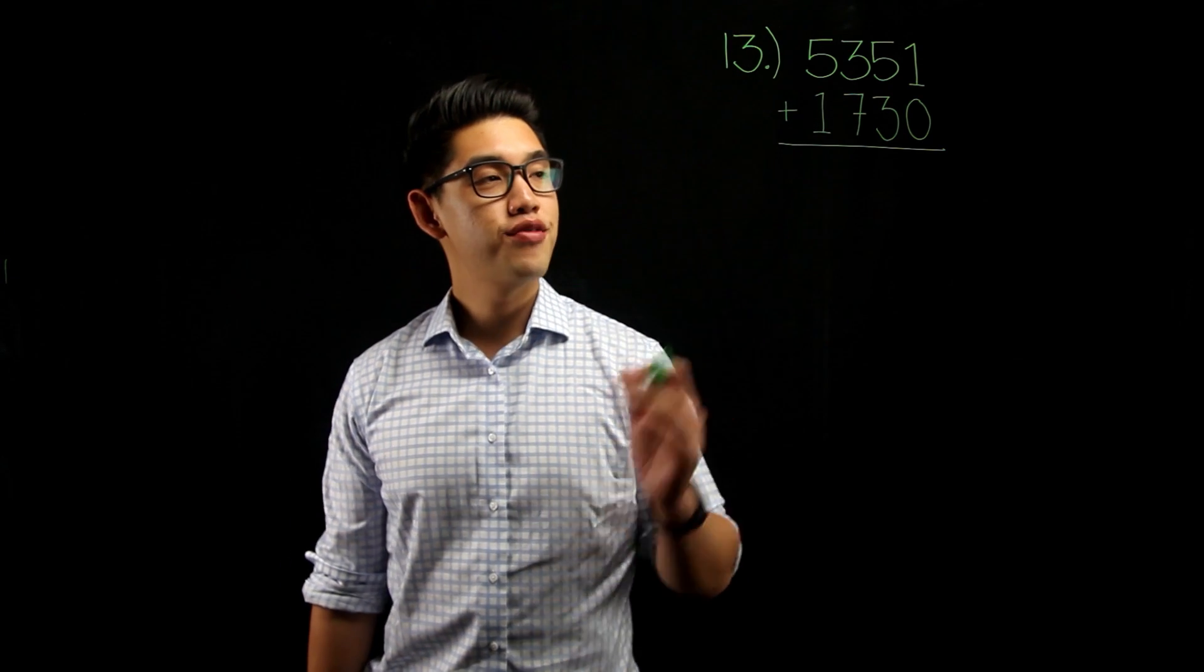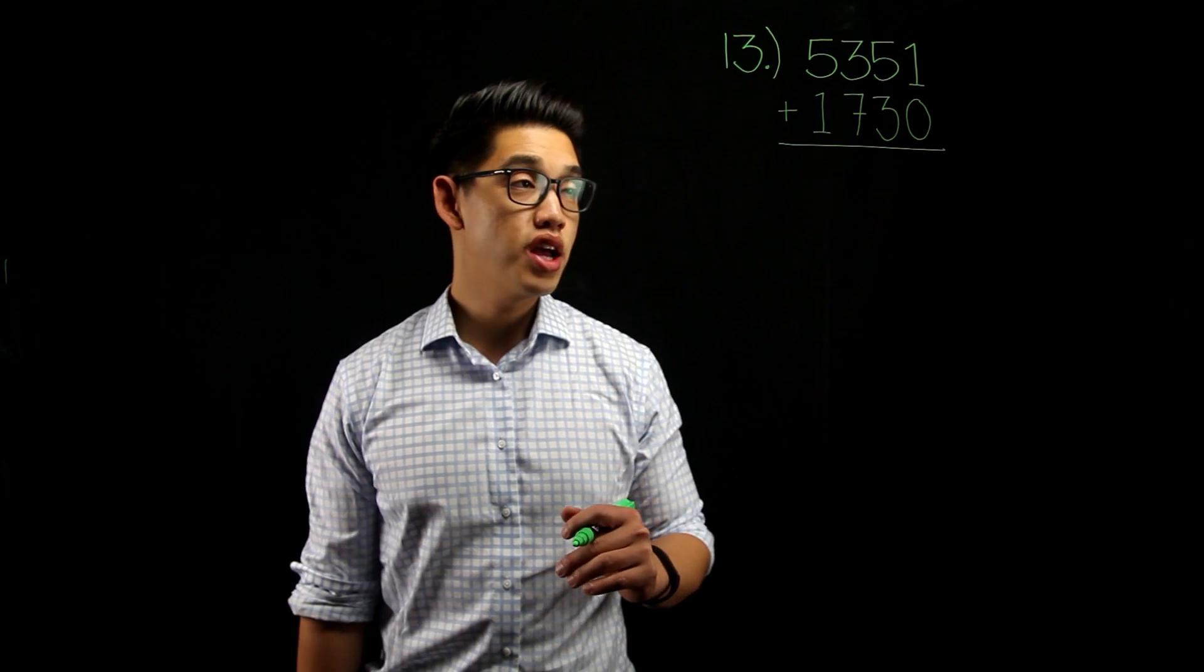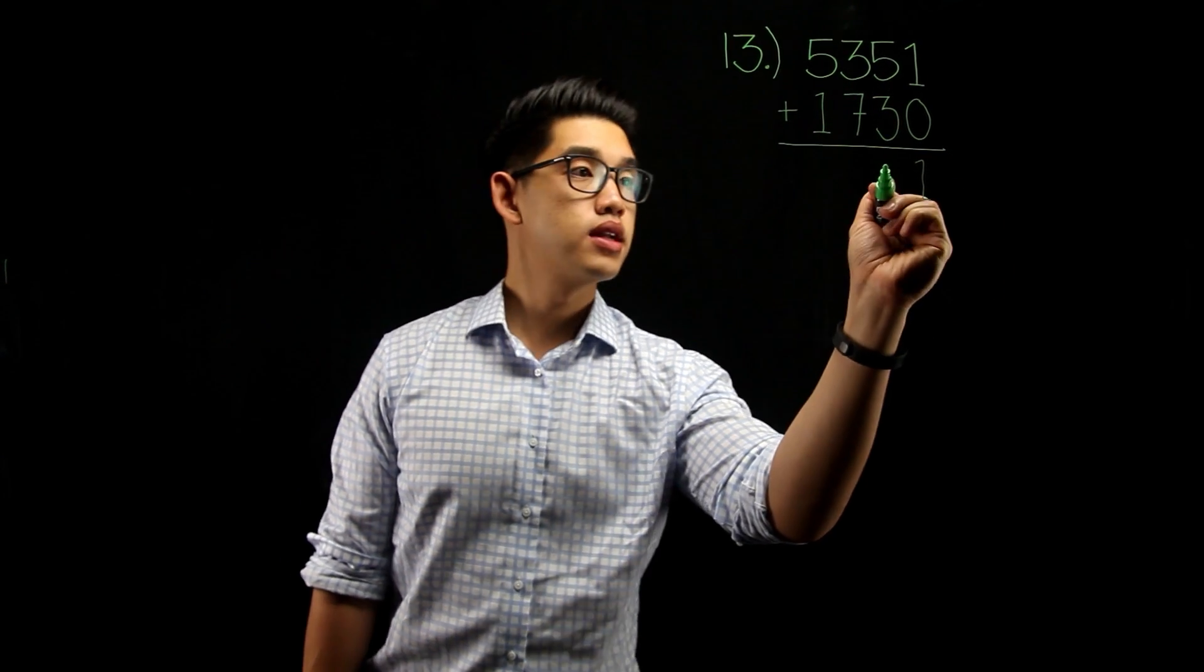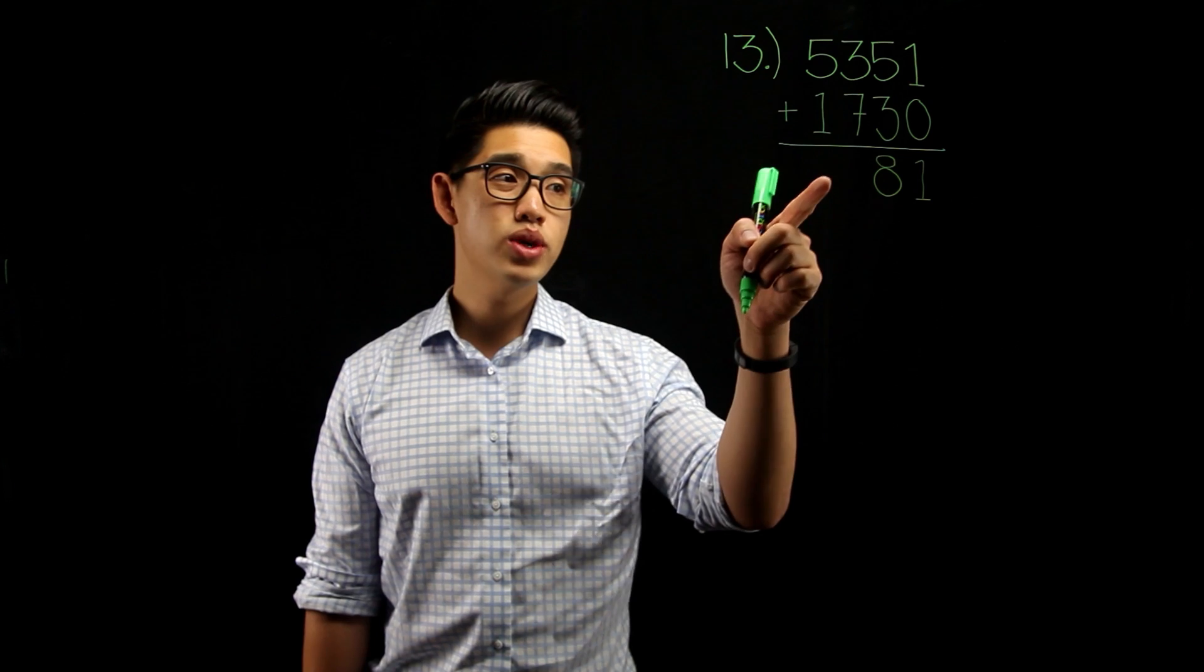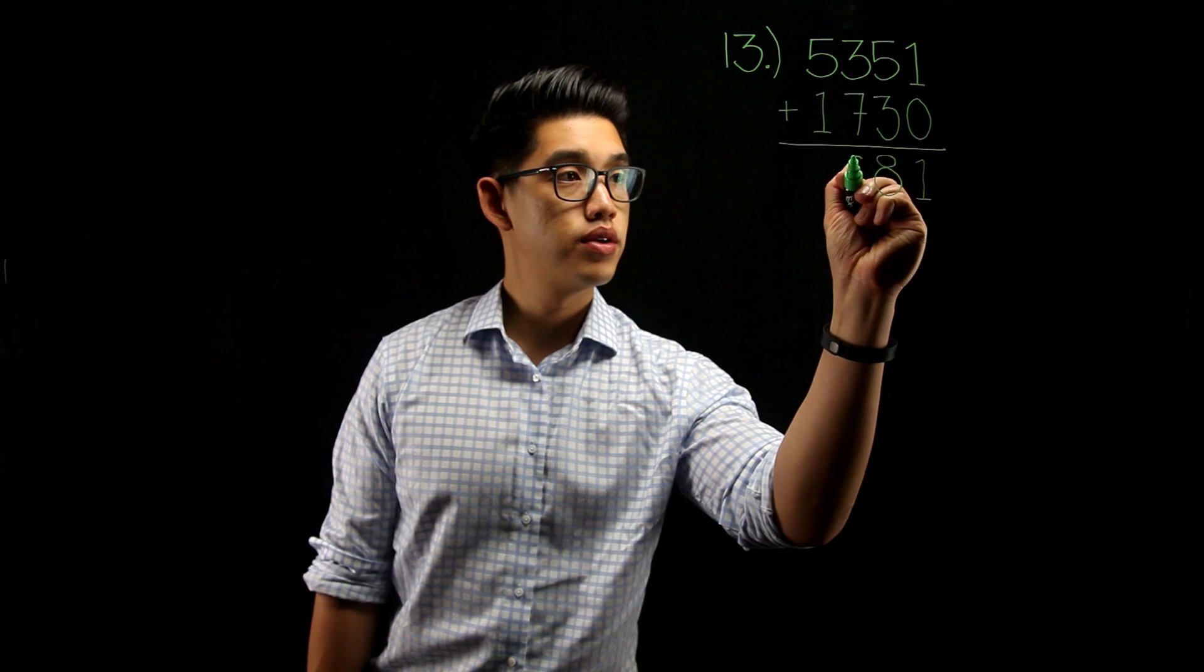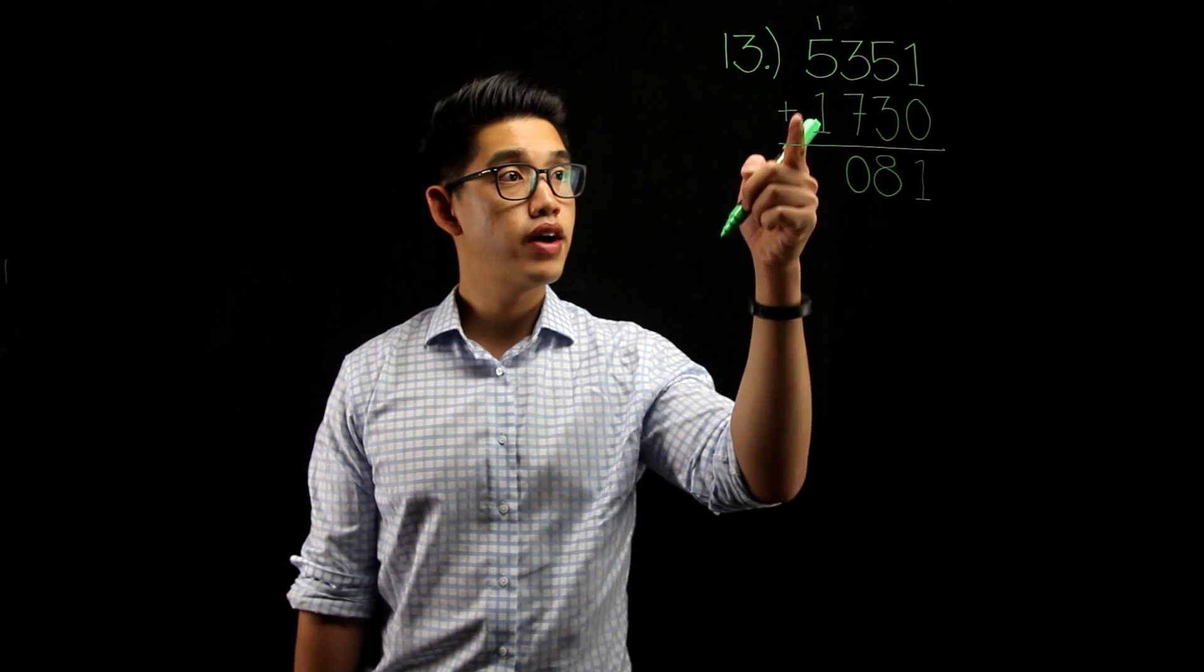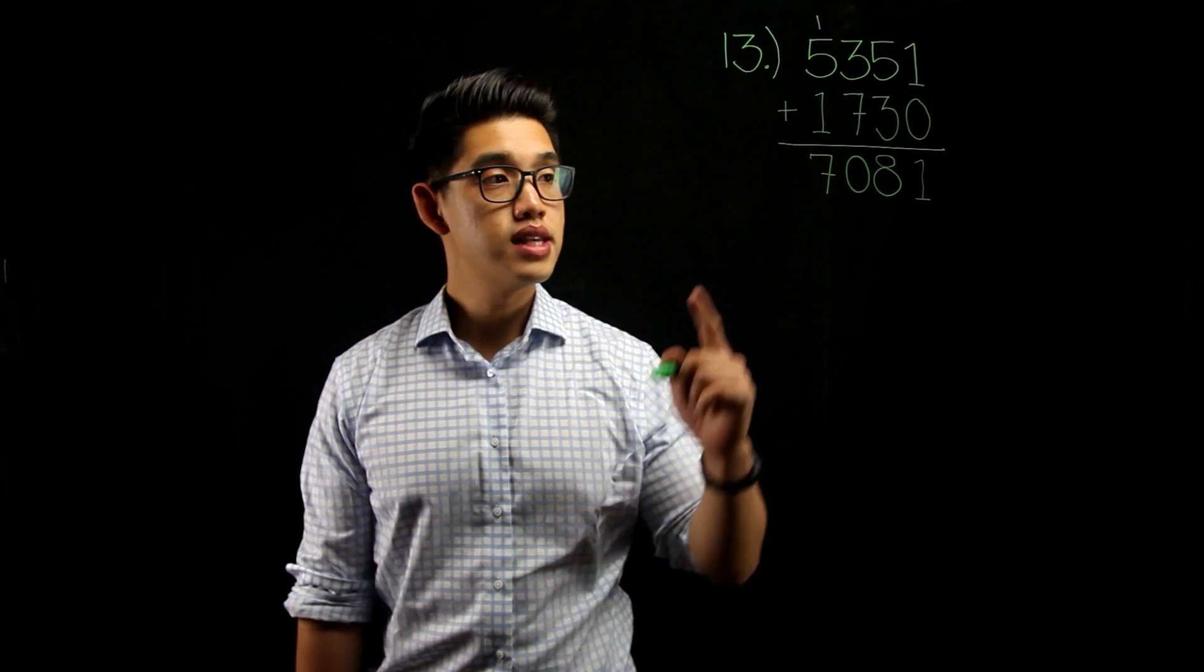For number 13, we have 5,351 plus 1,730. When we want to add these two numbers together, it's pretty easy. All we have to do is add up and down. We have 1 plus 0, that's going to give you 1. 5 plus 3, that's going to give you 8. 3 plus 7, that's going to give you 10. But since we can't squeeze in 10 right here, we're going to split it up and put the 0 here first and put the 1 on top of the thousands value. Now, we add up all three of these numbers. 1 plus 5 plus 1, that's going to give you 7. So, your answer is going to be 7,081.